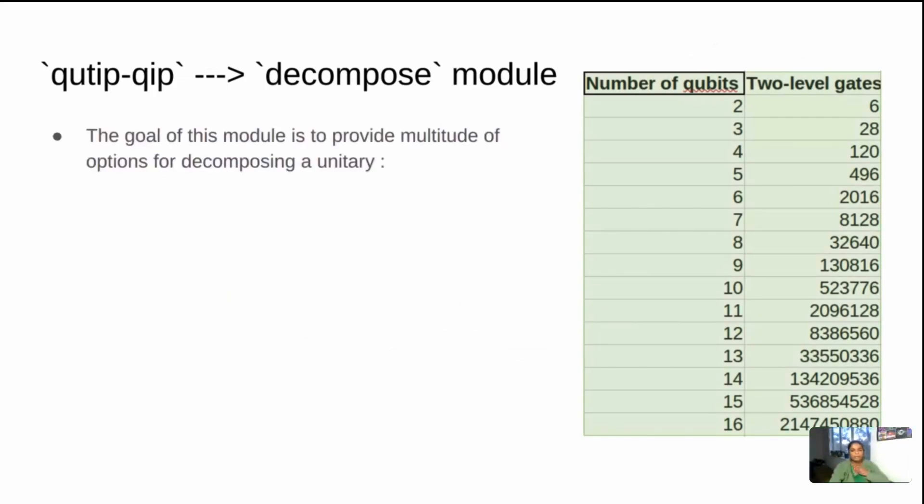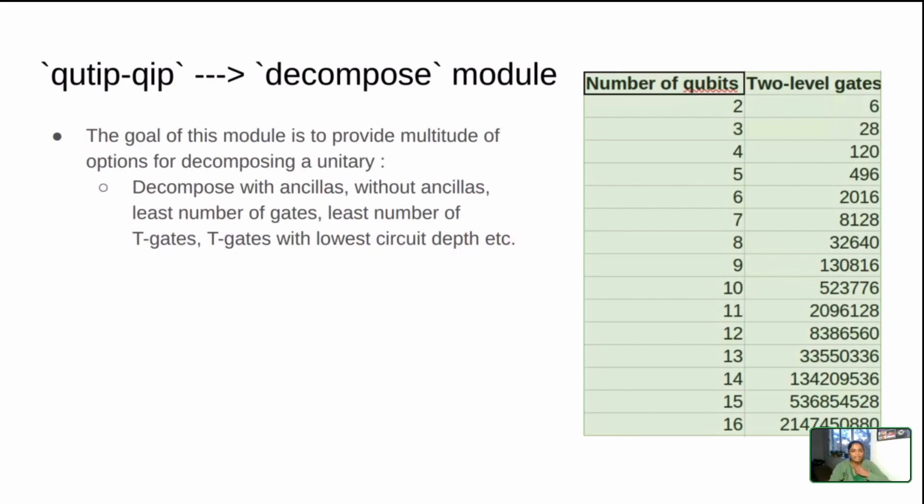What I want to do with this module is to be able to decompose the unitary with options with ancillary qubits, without ancillas, and least number of gates. I know this is available in a lot of other available software as well. They optimize for the lowest number of gates, but other options might not be available as much.